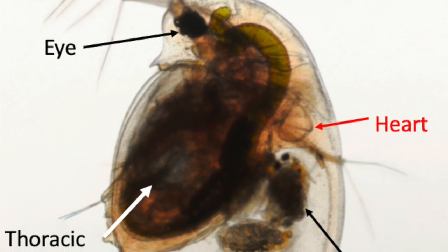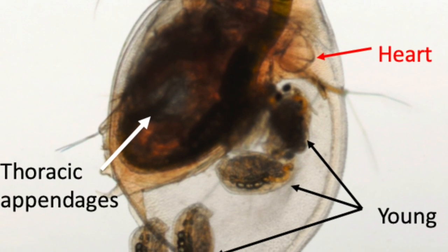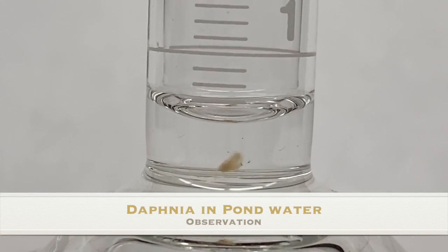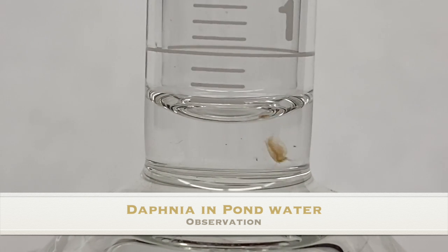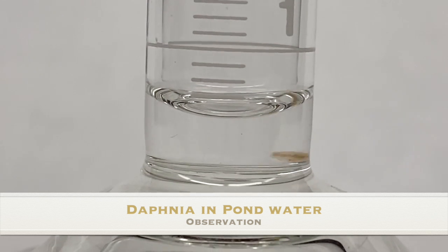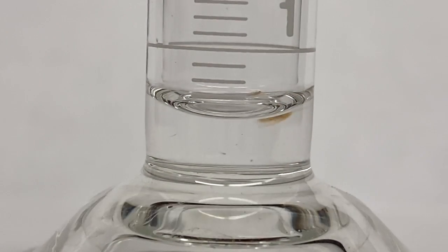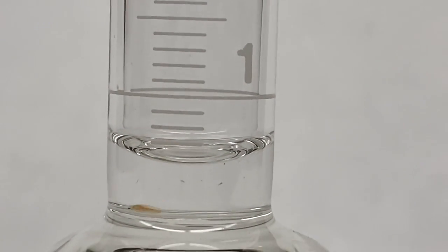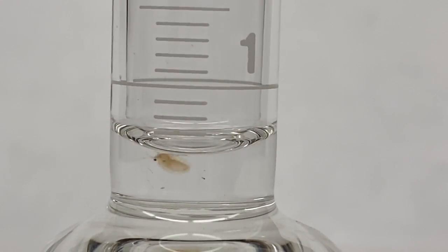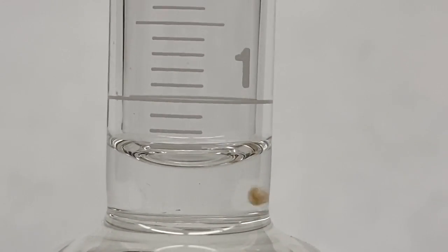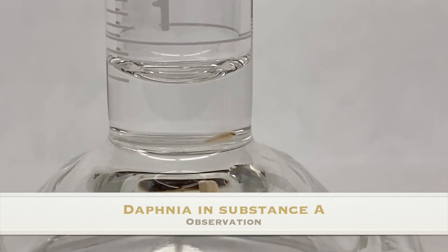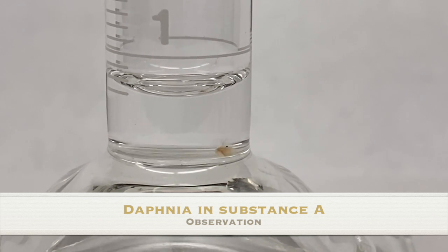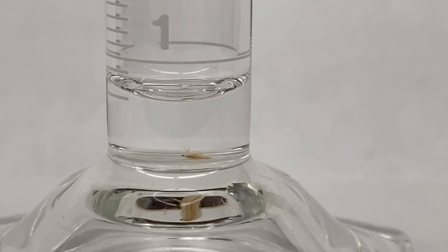The next thing that we're going to do is make an observation of the activity level of a Daphnia in pond water. The big question we're asking today is: what factors influence the activity of Daphnia? We're starting out here observing the activity of Daphnia in pond water. By the end of this clip, you'll have watched this Daphnia for about 25 seconds, and then we're going to switch out this water for an unknown substance that we're calling Solution A. This Daphnia has been sitting in Solution A for about a minute and then we started taking video. Notice what's happened to the behavior of the Daphnia in the minute since we started videotaping.